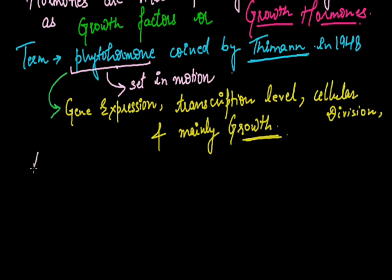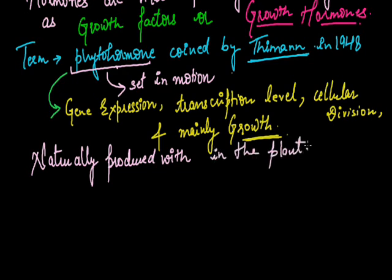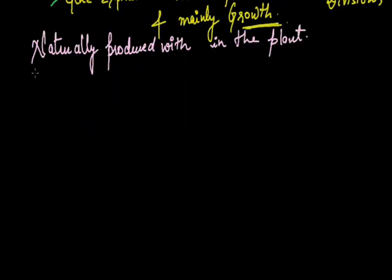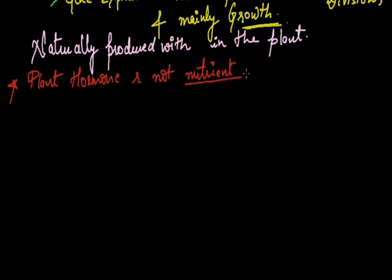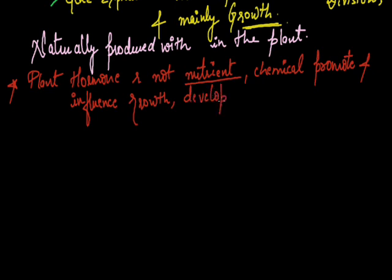The phytohormones are naturally produced within the plant itself. As I have already discussed, they lack the glands, each cell is capable of producing the hormone. One more important thing is that plant hormones are not nutrients, but these are the chemicals which promote and influence growth, development, and differentiation of cells and tissues.